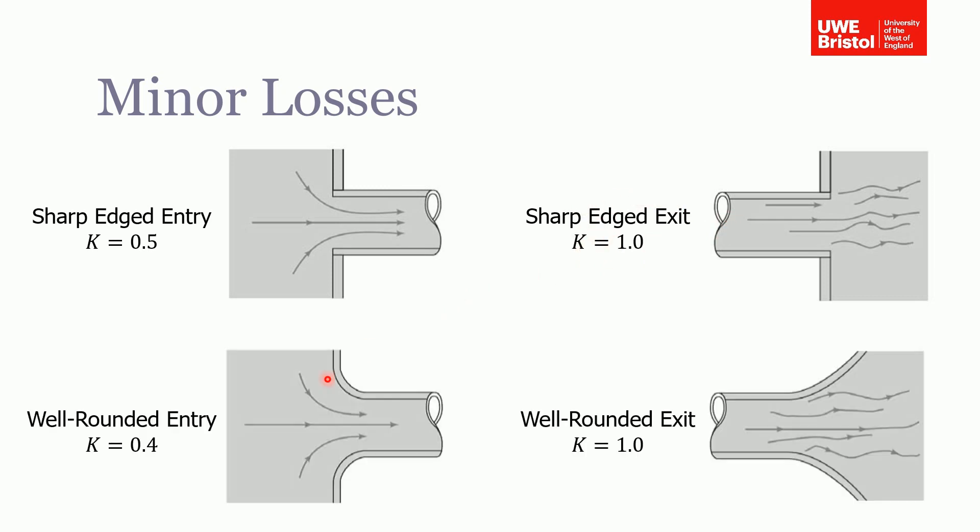You can see it changes slightly for a well-rounded entry—it's slightly reduced to 0.04, which means it's going to have a smaller pressure loss, but you see it makes no difference on the exit.